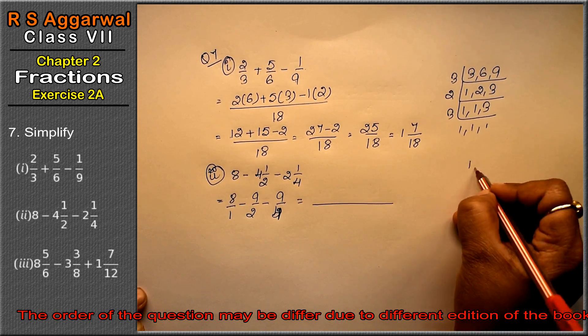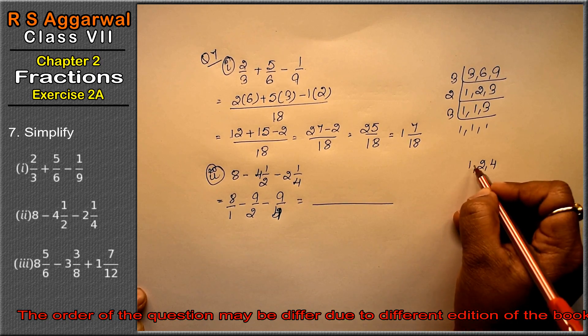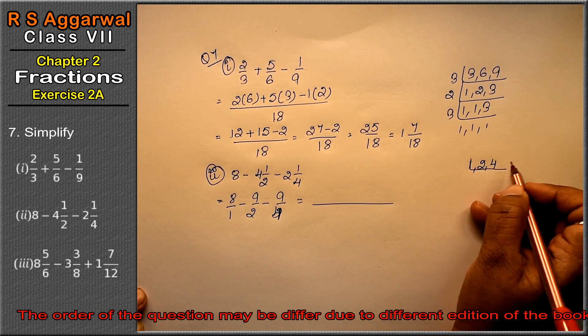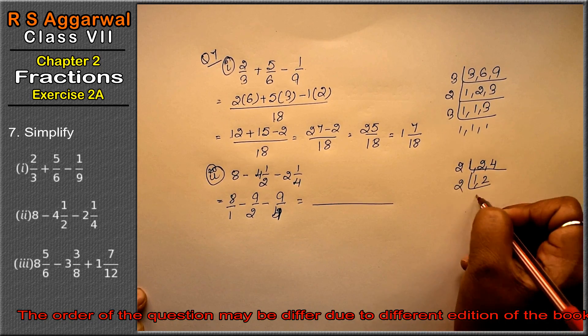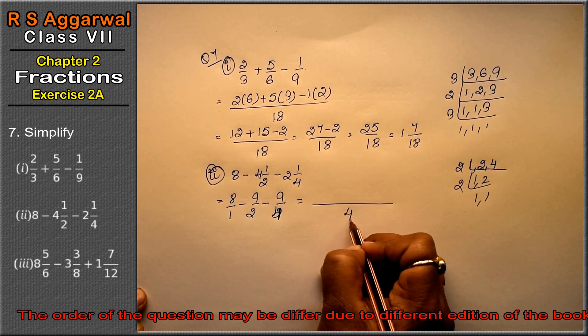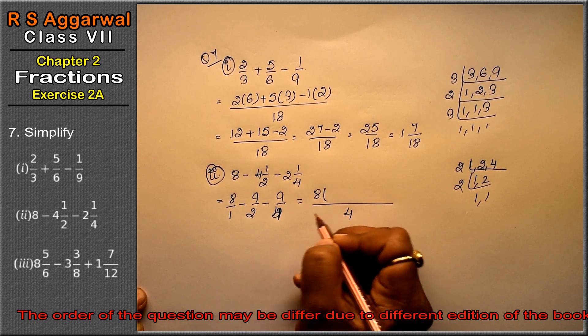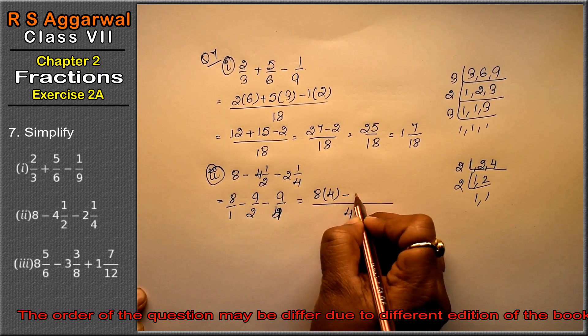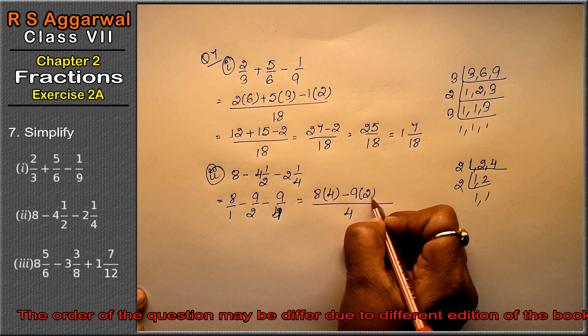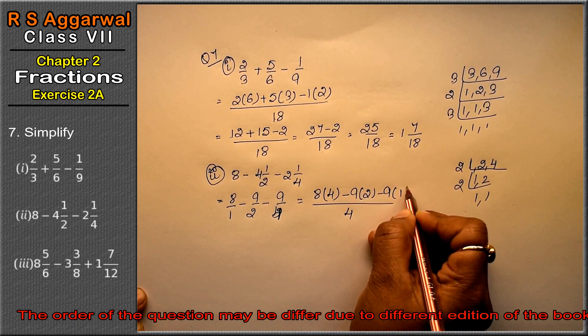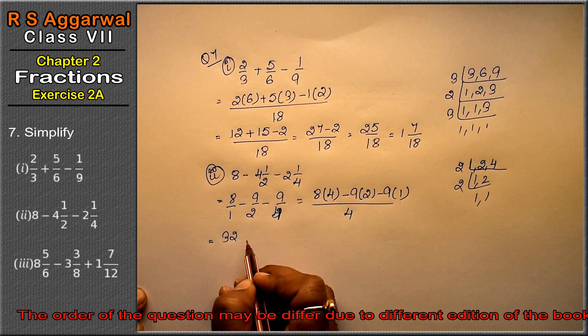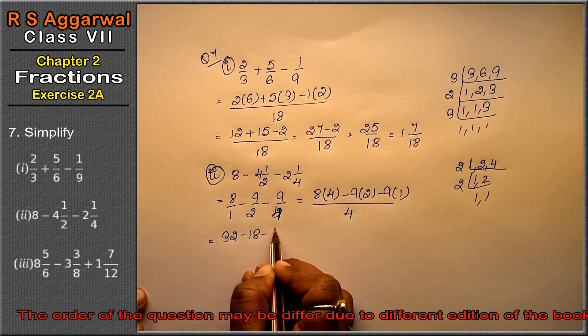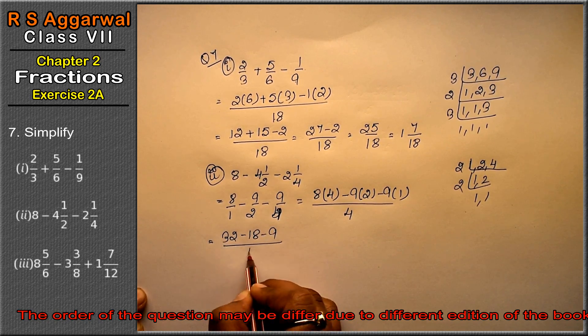Now 1, 2, 2 is a 4 plus 2, 1, so 4 LCM came. Now 1, 4 is 4 minus 2, 2 is 4 minus 9, 1, 4, 1 is 4. So this is how come 4, 32 minus 18 minus 9 upon 4.